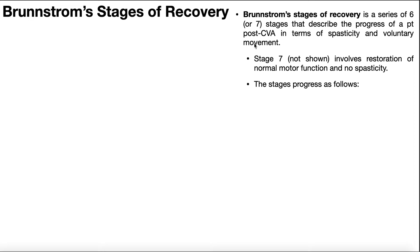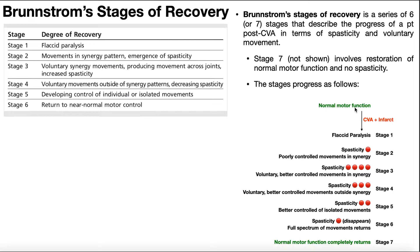Persons start with normal motor function — this is before the stroke, they're just going about their day doing normal things. Then they have that CVA, the Cerebrovascular Accident, the stroke. Blood flow gets cut off to one part of the brain, that part of the brain starves, and you get an infarct. Once that happens, they're going to progress into stage one, which is initially flaccid paralysis of the associated limbs corresponding to that part of the brain that got the infarct.